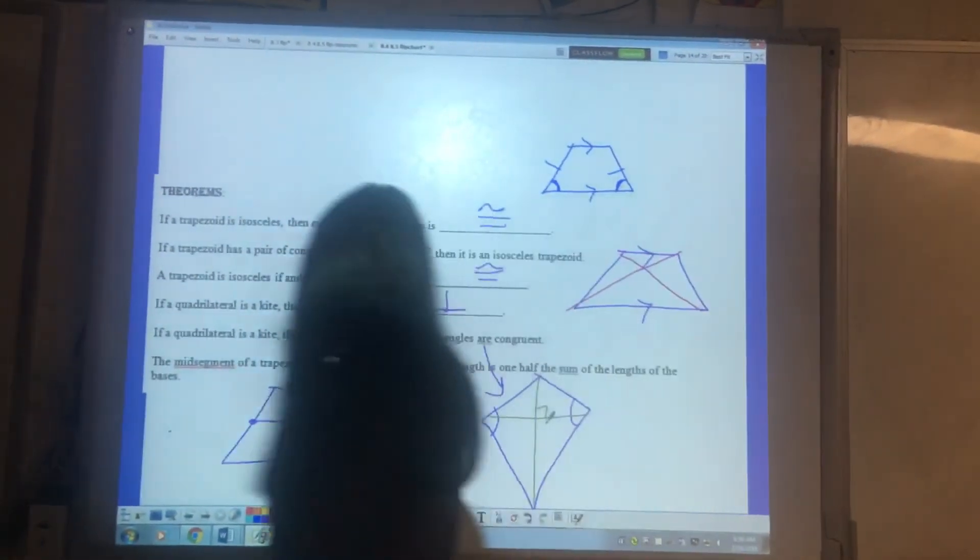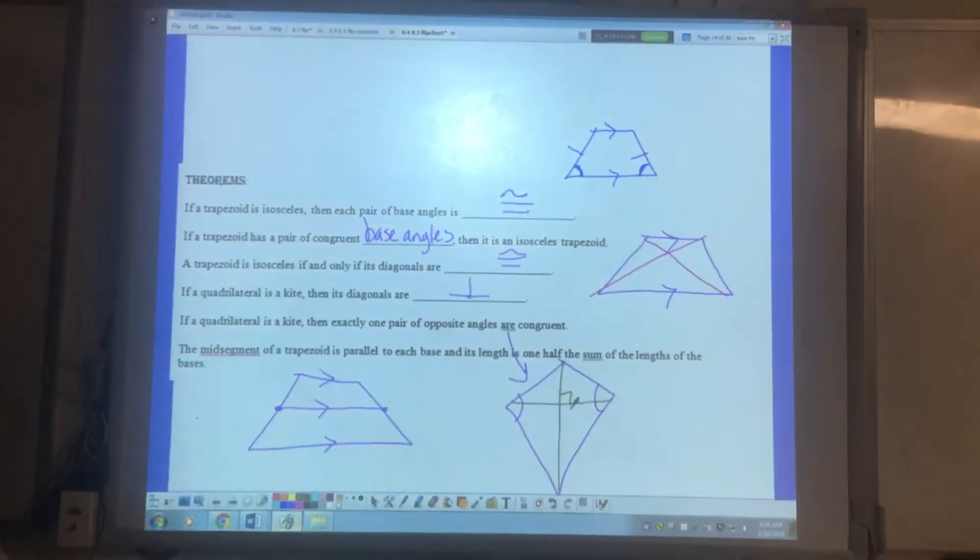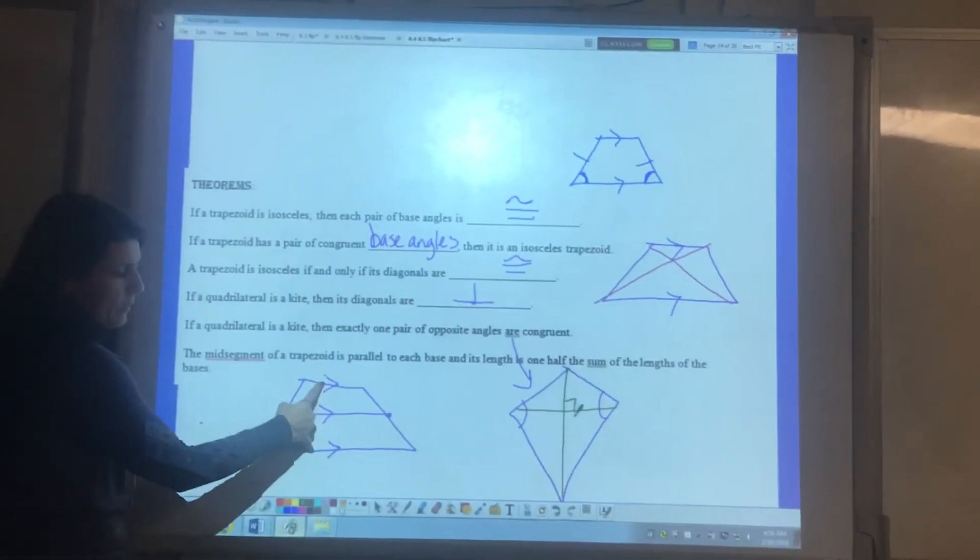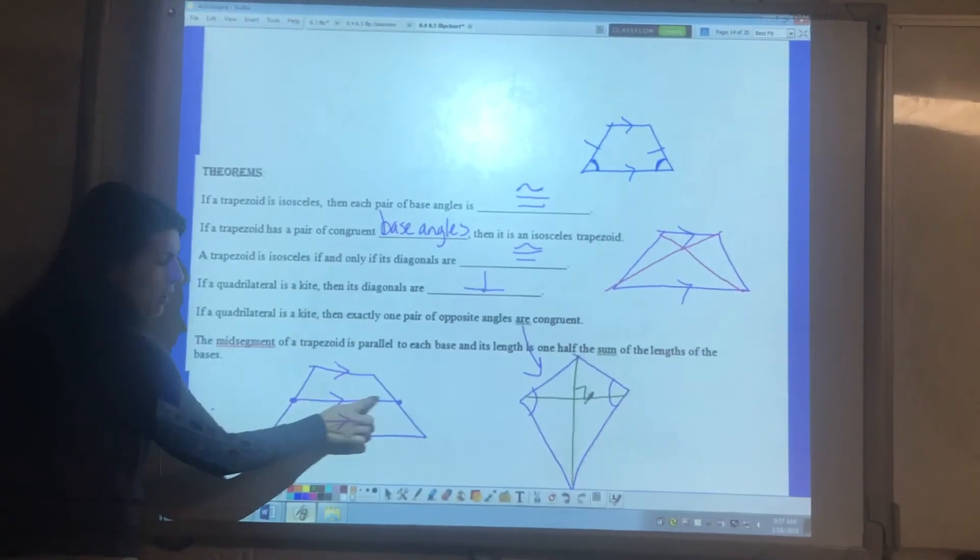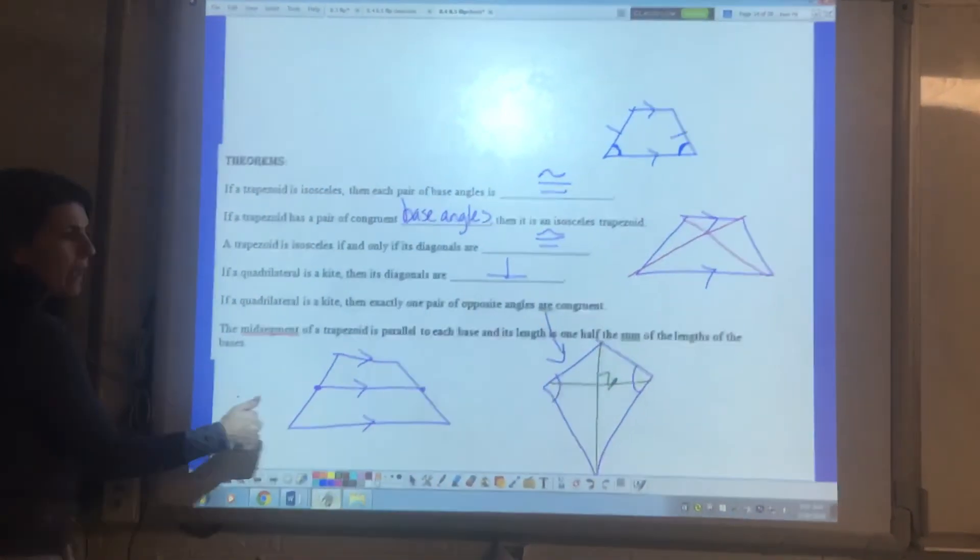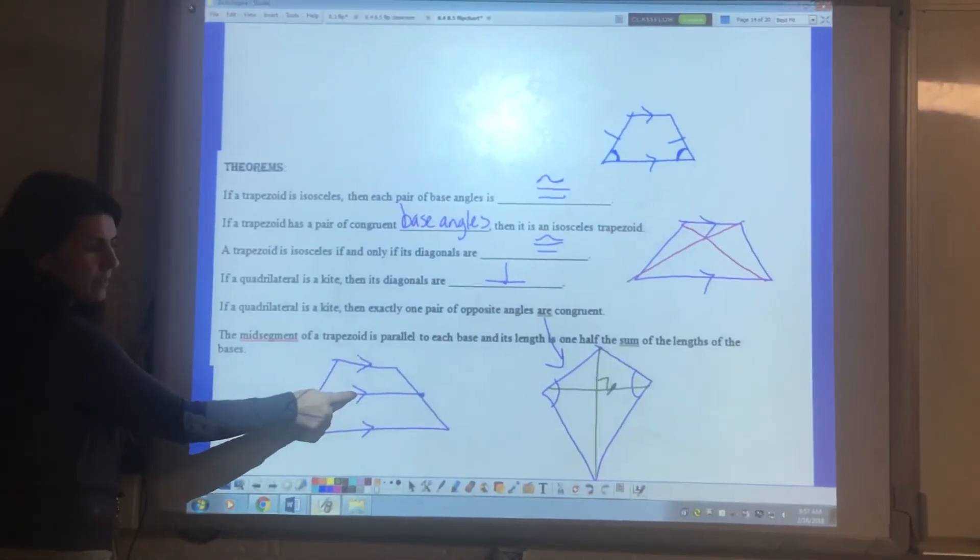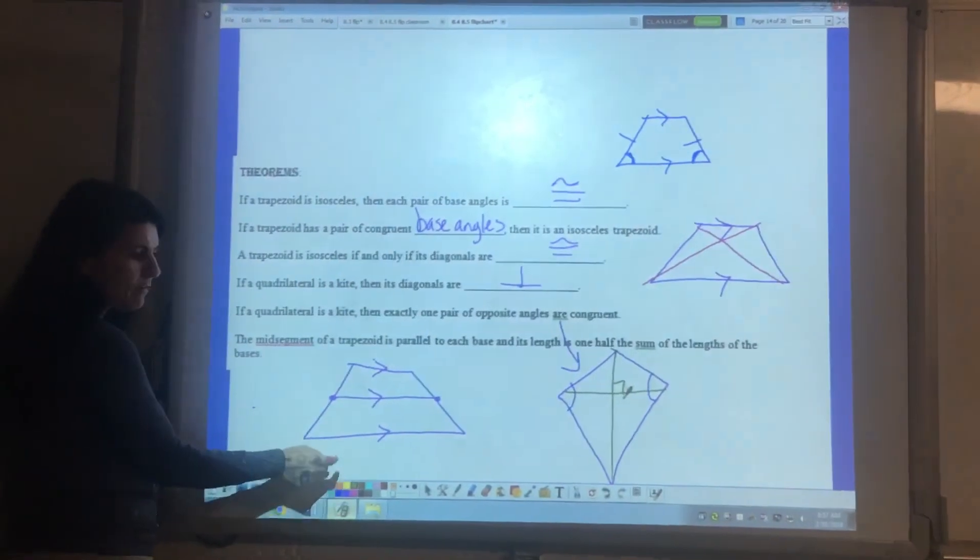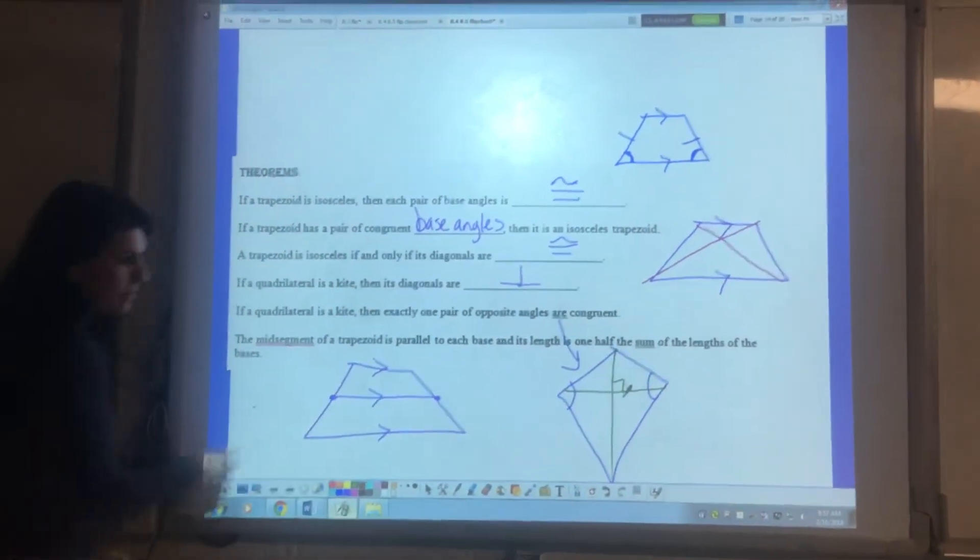Mid segment of a trapezoid is parallel to the base and half the sum of those legs. Well here's my trapezoid. We already know these are parallel. When I draw that mid segment that is also parallel to those two bases. And it also tells us that this is half the sum of these two. So you would add this, add this, divide by two, and that will give you that length.